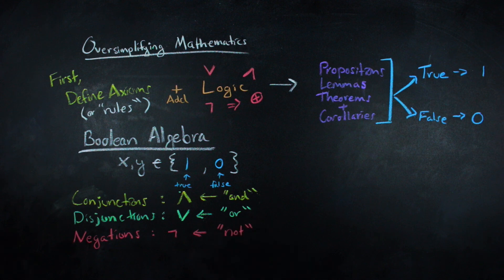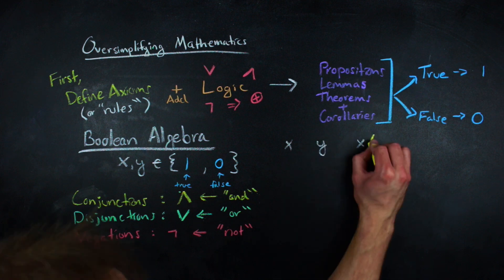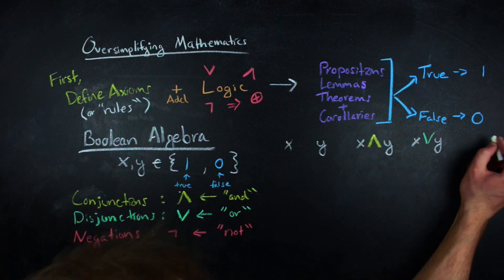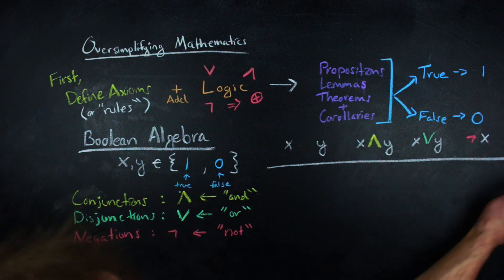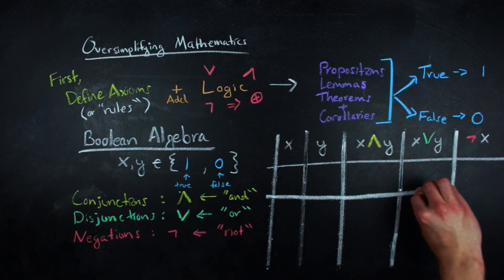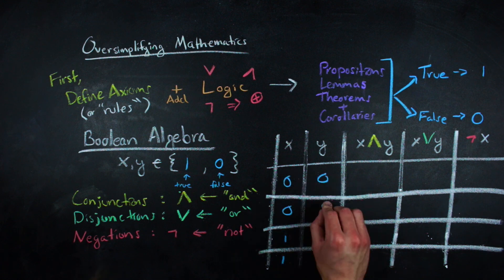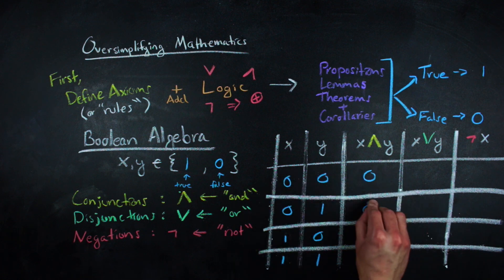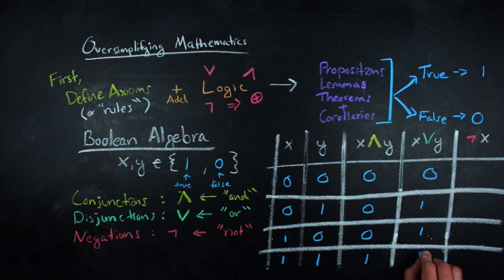As we will see, depending on how you usually use or, disjunctions can be a little bit counterintuitive. Using truth tables, we can go ahead and give the definitions for these operators, given that we have a value for x and a value for y. These are the possible values of x and y, and x or y, and not x.